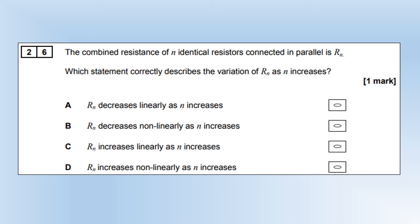The combined resistance of N identical resistors connected in parallel is Rn. Which statement correctly describes the variation of Rn as N increases? Using our parallel resistor rule, this would be an expression for the total resistance. We can clearly see that the total resistance is inversely proportional to the number of resistors, which is B, because inversely proportional is not a straight line graph.